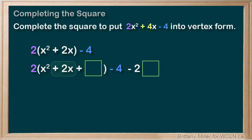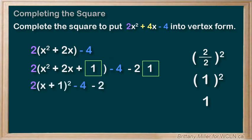That means that b is 2. So b divided by 2 squared equals 2 divided by 2 squared which is 1 squared which is 1. Let's put that 1 in our boxes. So the 2 stays out front and then we have x plus 1 squared and then minus 4 minus 2 equals minus 6. Making our final answer 2 times x plus 1 squared minus 6.